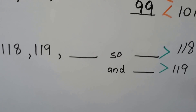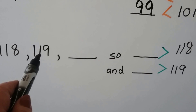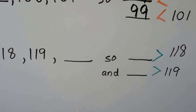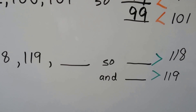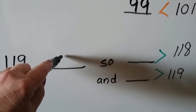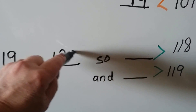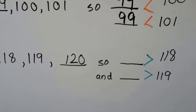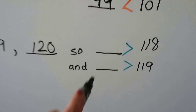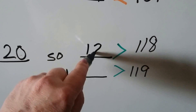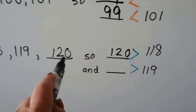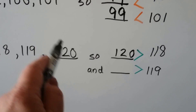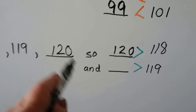One hundred-eighteen, one hundred-nineteen — what number comes after? One hundred-twenty comes after one hundred-nineteen. One hundred-twenty is greater than one hundred-eighteen, and one hundred-twenty is greater than one hundred-nineteen because it comes after both of them.